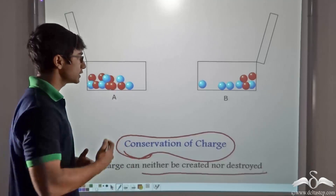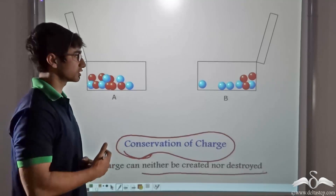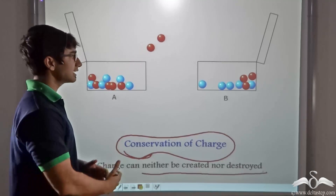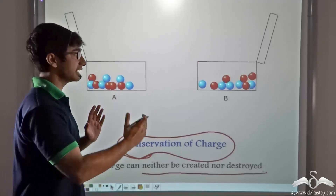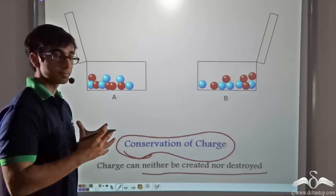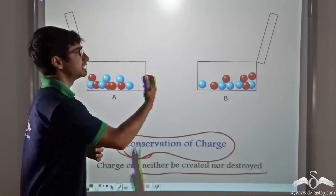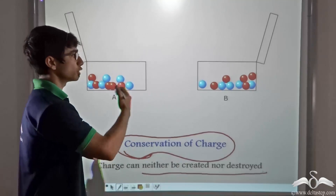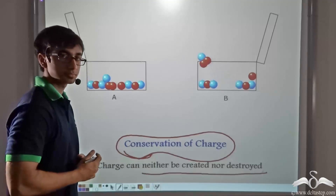Just as the number of blue and red balls is conserved even when transactions take place with different numbers of balls from A to B, the same applies to charges.